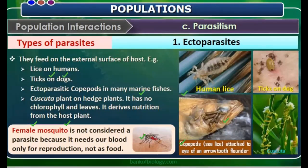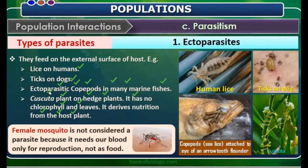Ectoparasites in detail: examples include lice on humans, ticks on dogs, copepods in many marine fishes, and Cuscuta plants on hedge plants. Cuscuta has no chlorophyll and derives its nutrition from the host plant.